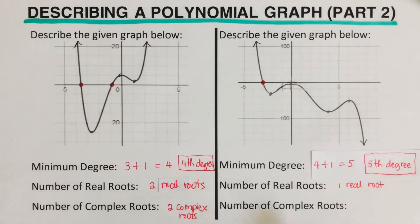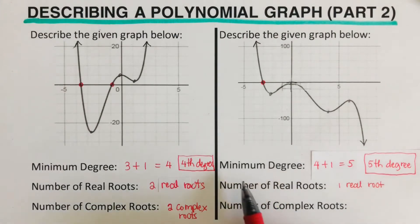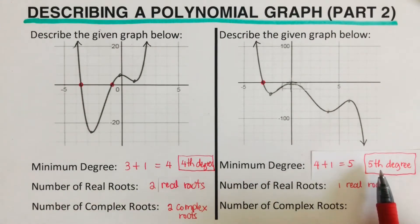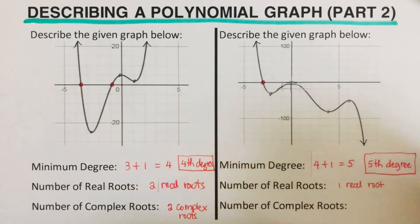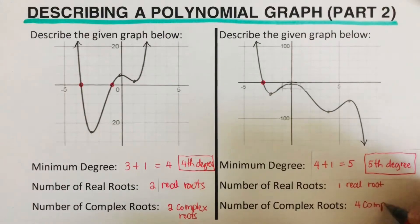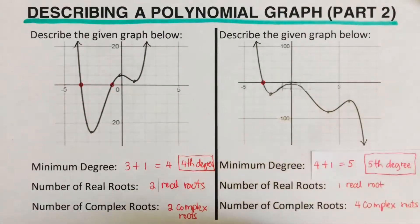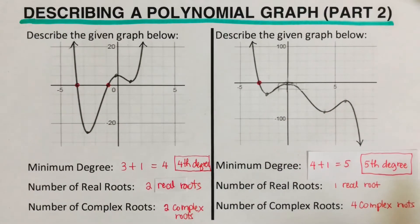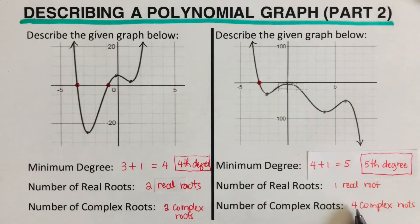Now let's find the complex roots. The total number of roots equals the minimum degree. Since the polynomial is fifth degree and there is one real root, there are four complex roots. One real root plus four complex roots equals five.